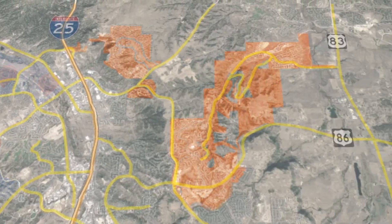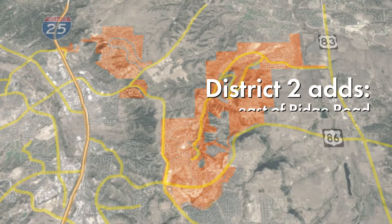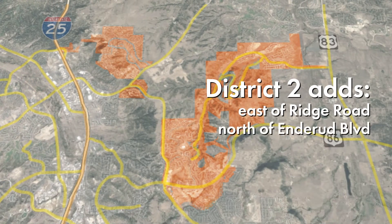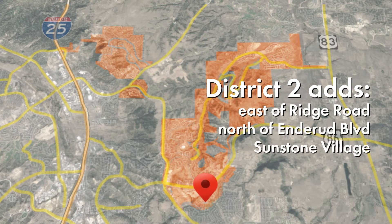District 2 in Northeast Castle Rock took on voters east of Ridge Road and north of Enderud Boulevard, including Sunstone Village. They were previously in District 5.